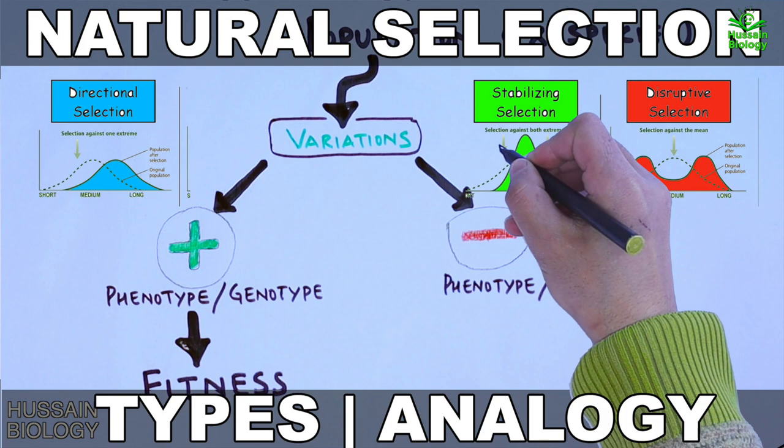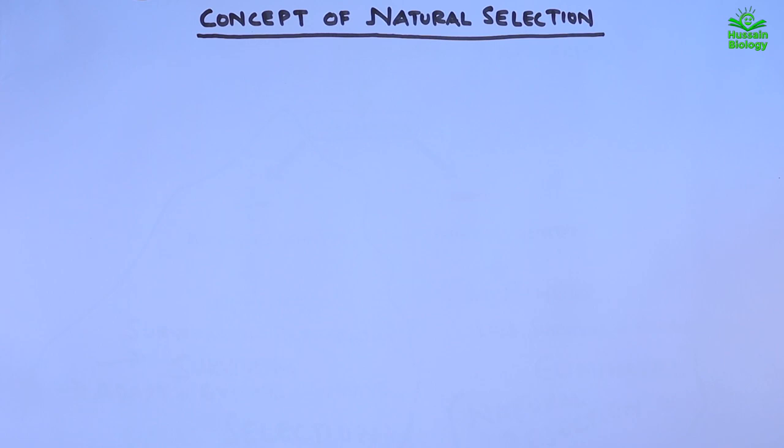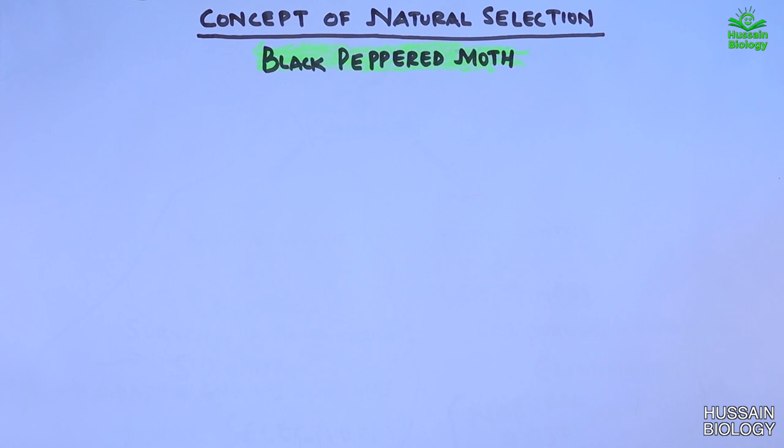In the previous video of the evolution series, we discussed about natural selection. If you want to watch that video first, the link is in the description. Now in this video, we'll be discussing about the concept of natural selection through an example of the black peppered moth — it's one of the classical examples to demonstrate the concept of natural selection.